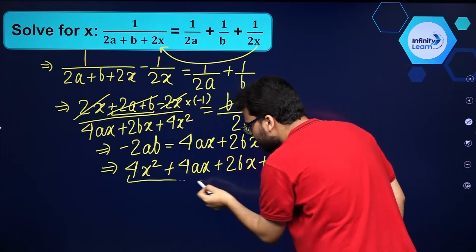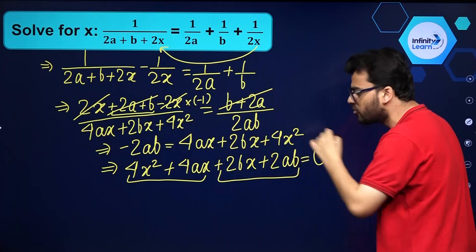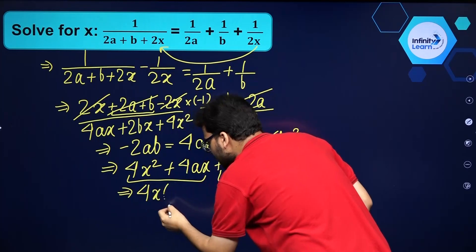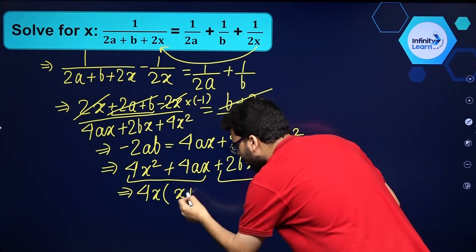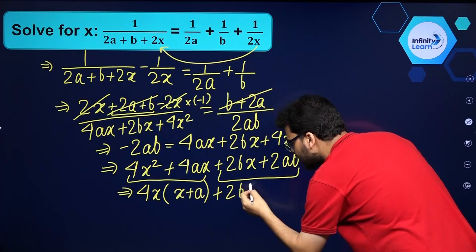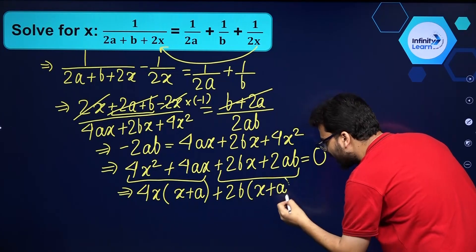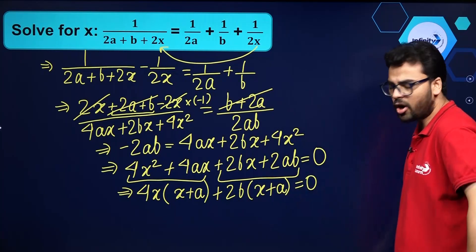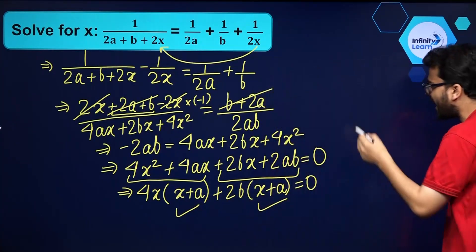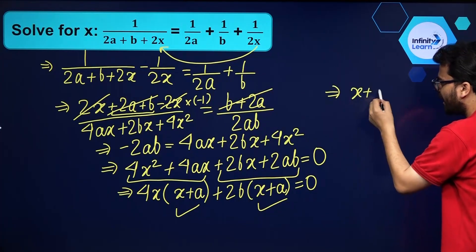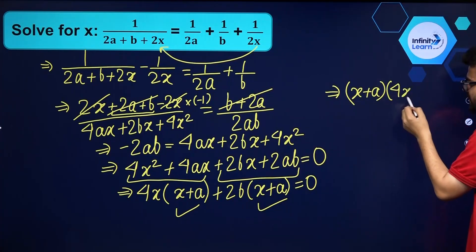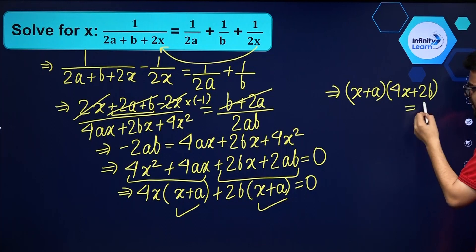So you see we have got two groups — this is the first group and this is the second group. Out of the first group I can take 4x as common, so I'll be left with x plus a. Now out of the second group I can take 2b as common, so again I'll be left with x plus a, and that is equal to 0. Now out of the whole left hand side expression I can take x plus a as common, so I'll be getting x plus a, and inside the other bracket will be left with 4x plus 2b, equal to 0.